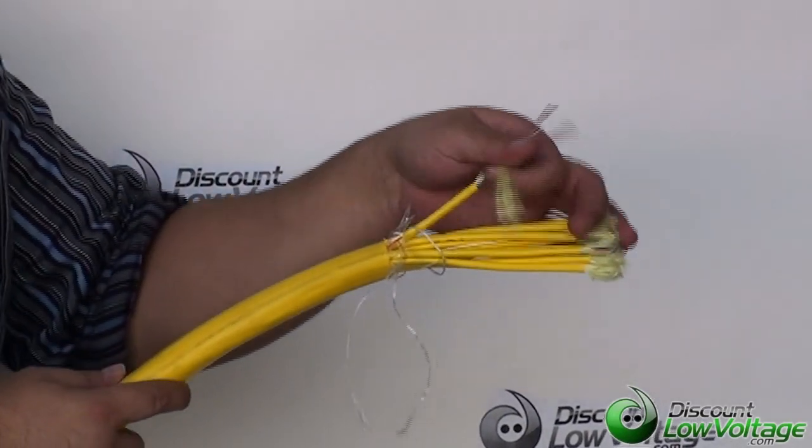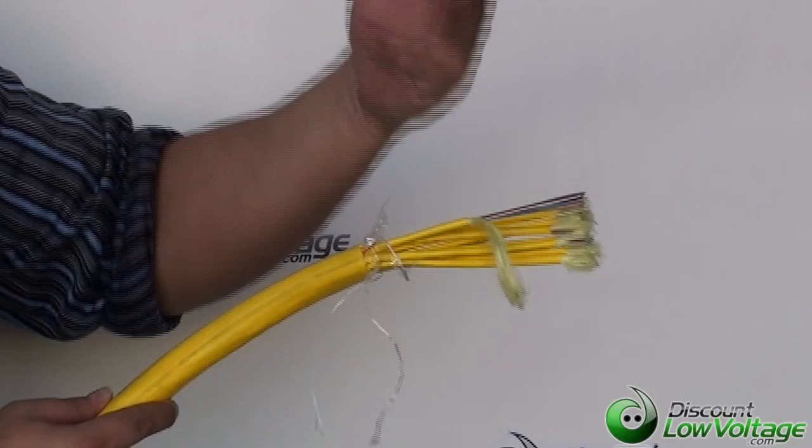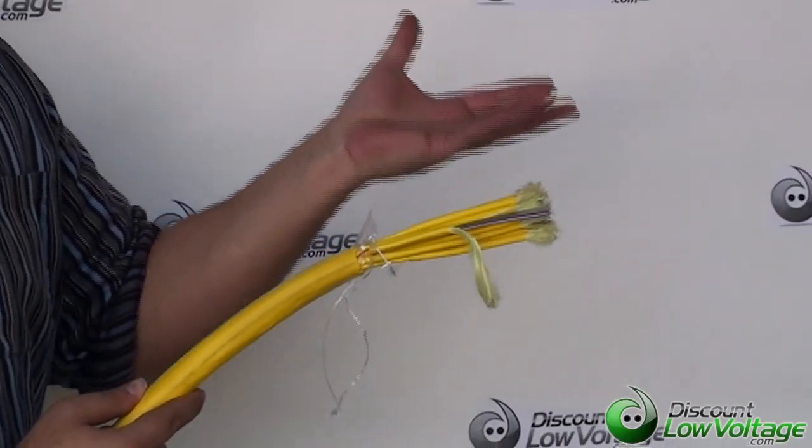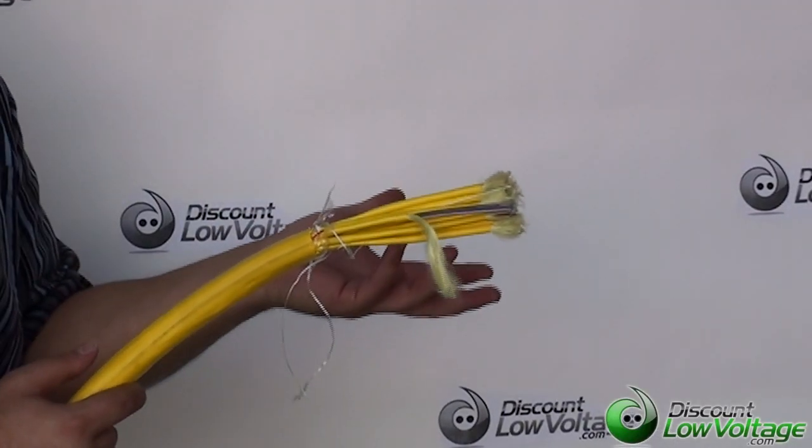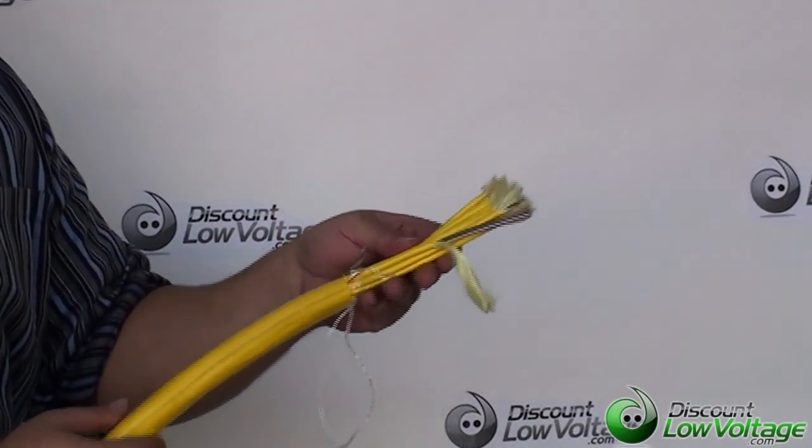With the loose tube you need a fan out kit that's going to be additional labor and cost and if you've got this many to terminate it's just a little extra labor saver with the tight buffer.